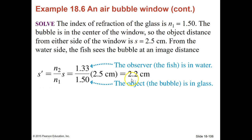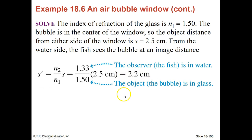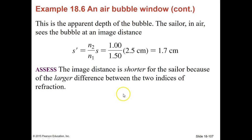To solve this, we plug in the observer as the fish, which is in the water — so this is the index of refraction for the water. However, the bubble, the object, is in the glass, and that's 1.5. We know that the object distance is about 2.5 centimeters. So then we're able to solve, and we see that the image distance is about 2.2 centimeters. That is the apparent depth of the bubble.